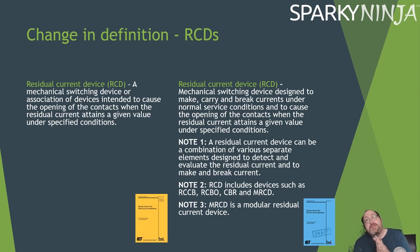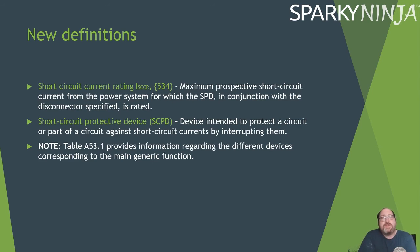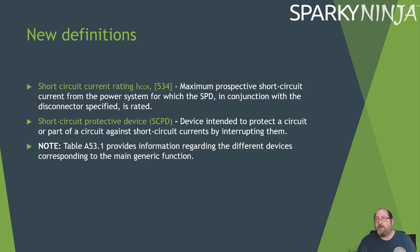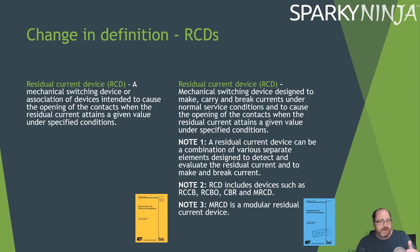The MRCD is a modular residual current device type, typically seen in control panels. The short circuit current rating — SCCR — is the maximum prospective short circuit current for the power system for which the device in conjunction with a specified disconnector is rated. The SCPD, or short circuit protective device, is a device intended to protect a circuit against a short circuit current by interrupting it. New devices being added to the document include the SCPD, the CPS device, and the AFFD for arc flash — we'll see how these are integrated as the book nears release.